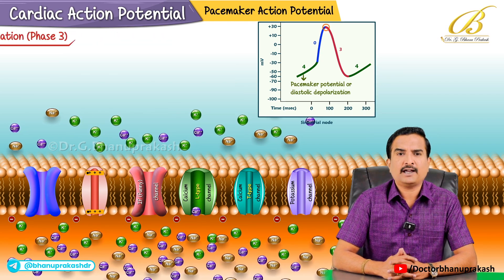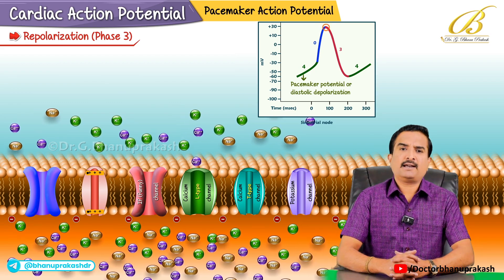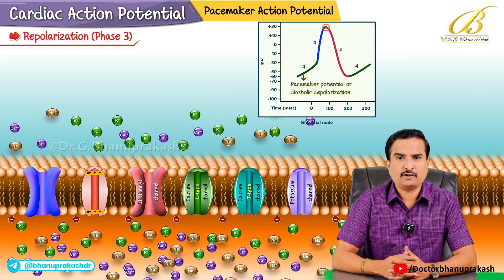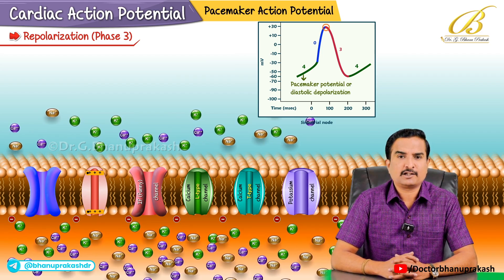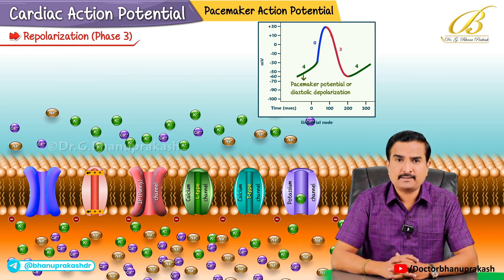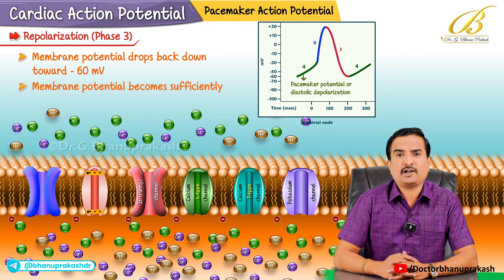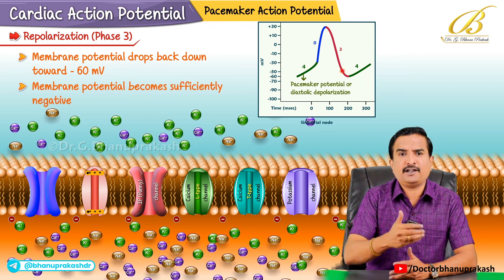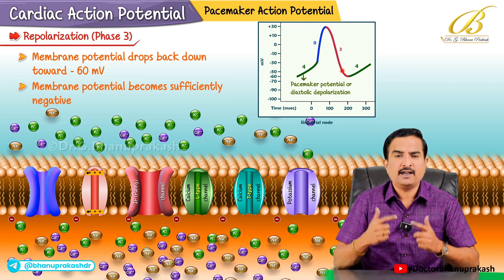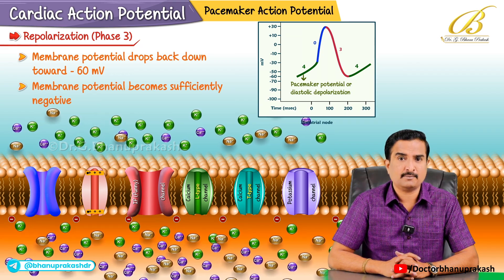After the upstroke, we have a repolarization phase called phase 3. After the cell depolarizes, L-type calcium channels inactivate, and delayed rectifier potassium channels open, increasing potassium efflux. Because of this potassium efflux, the membrane potential drops back down towards minus 60 millivolts. Once the membrane potential becomes sufficiently negative, the funny channels open again, fueling the next gradual depolarization. This cycle keeps repeating, giving the SA node its automaticity - which is due to this unstable resting membrane potential.